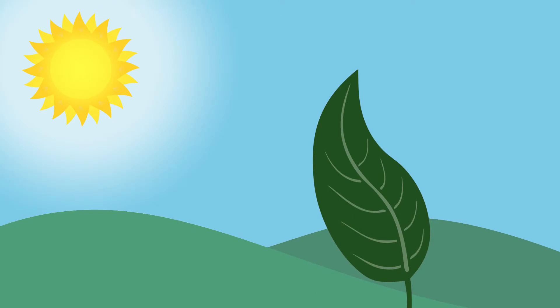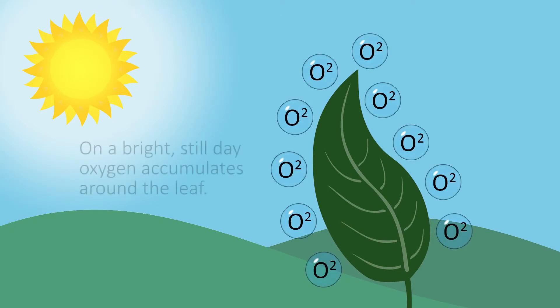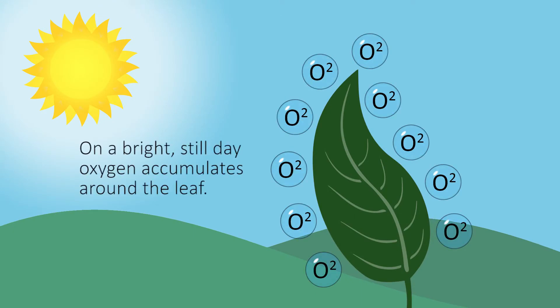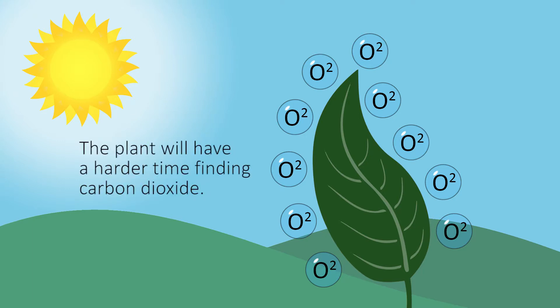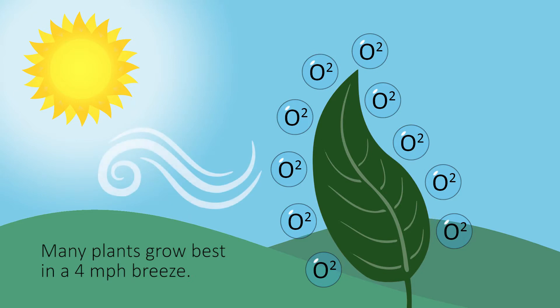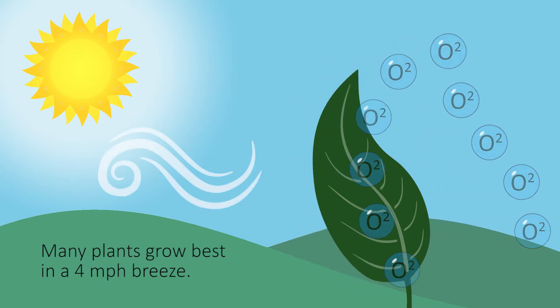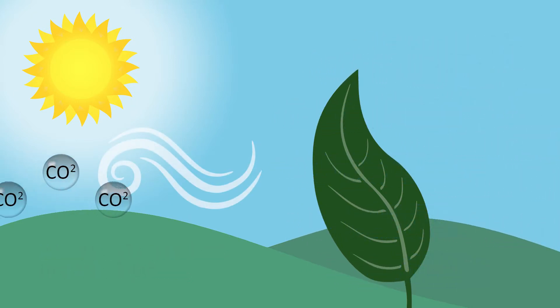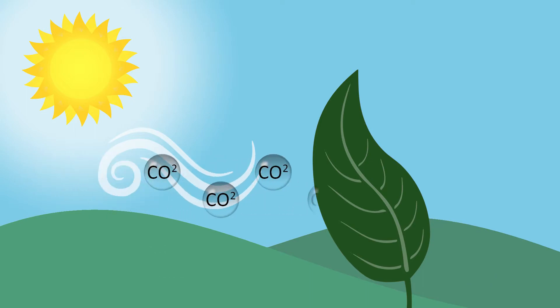Under really still conditions on a bright day when plants are photosynthesizing a lot, there will be a lot of oxygen right around the leaf that the plant gives off in the daytime, and the plant will have a harder time finding carbon dioxide. It's been shown that with a lot of plant species they grow best at about a four mile an hour breeze, because that enables the air to slowly move through the plants so that the oxygen is given off and fresh carbon dioxide can come to the leaf and go into the plant.